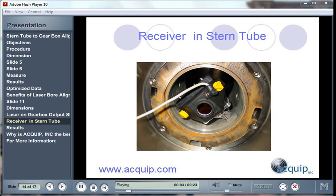Our receiver to our laser alignment system gets placed in the stern tube. This is what's going to receive the laser reading that's coming off the laser that's placed on the gearbox output shaft. These two elements are rotated and we're able to take sets of readings in order to see how these two elements are misaligned to each other.